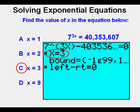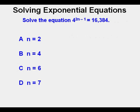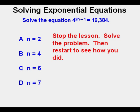Consider the ways we have solved this one. Which one was your favorite way? Try to apply your favorite technique on the next problem. Let's look at this final problem. Solve the equation 4 to the power of 2n minus 1 equals 16,384. Stop the video and solve the problem, then restart to see how you did.